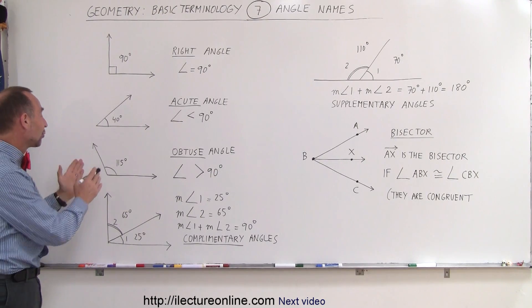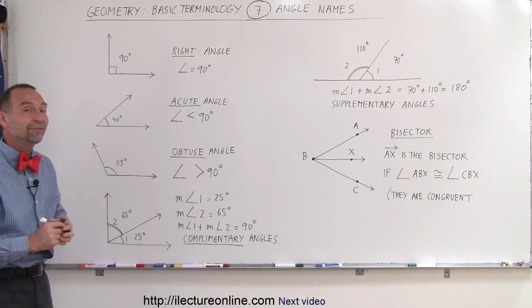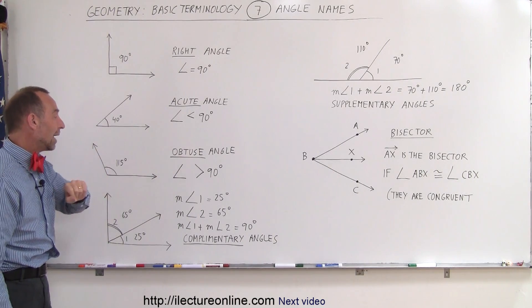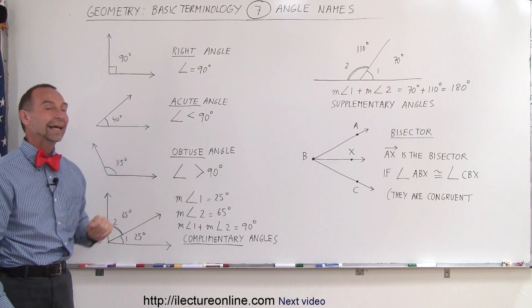So what about an angle that has a measure of greater than 90 degrees, for example, 150 degrees? Those angles are called obtuse angles. So the measure is greater than 90 degrees.